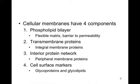A eukaryotic cell contains many membranes. We have membranes around the nucleus, continuous with the whole endomembrane system, and the Golgi apparatus, and all the vesicles, and finally the cell membrane. Each of these membranes share the same fundamental architecture. They have four components.